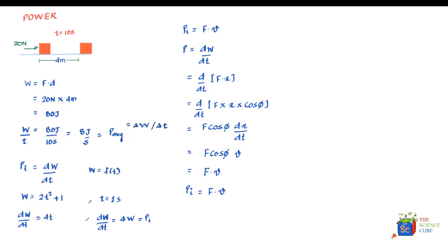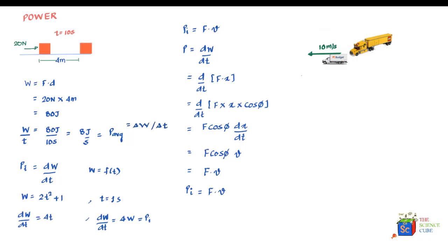To illustrate this concept, imagine a car traveling with a velocity of 10 meters per second that is hit by a trailer with a force of 4000 newtons. Let us label the vectors: the car is moving at 10 meters per second and the trailer hits it with a force of 4000 newtons. The force vector is shown pointing from the trailer onto the car.